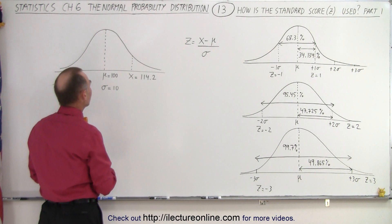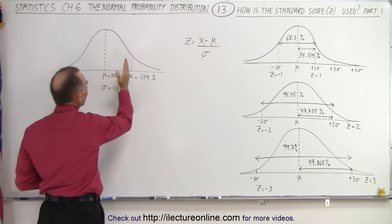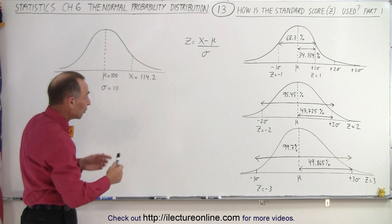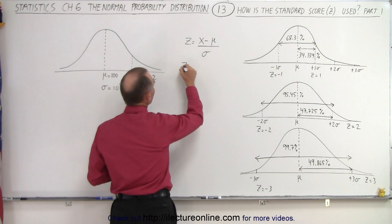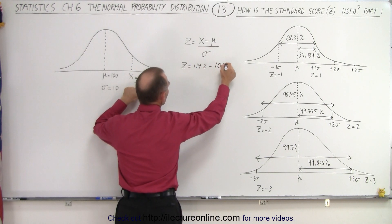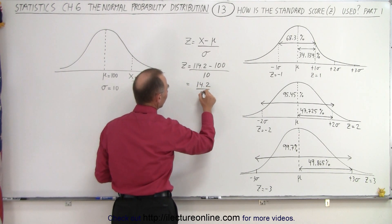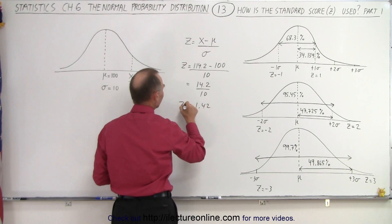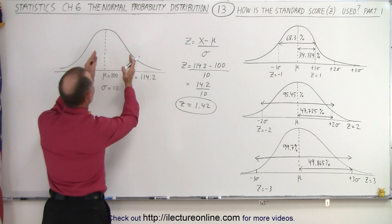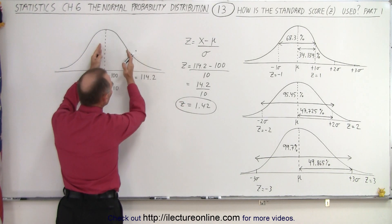Or, what we also can do with it is, for example, let's say we want to know the area underneath the curve, but in this case, we want to find it between the mean, and when the value equals 114.2. Also notice that we took the standard deviation to be 10. So, the first thing we need to do is find the Z value, so in this case, the Z value would be equal to the number of interest, which is 114.2, minus the mean, which is 100, divided by the standard deviation, in this case, 10. So, this becomes 14.2 divided by 10, and that gives us 1.42. So, that's the Z value.